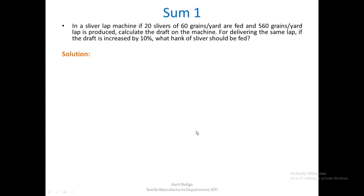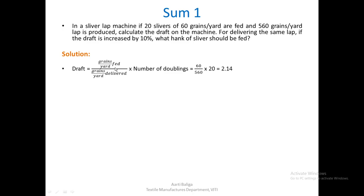Now we come to the first problem. In a sliver lap machine, 20 slivers of 60 grains per yard are fed and a 560 grains per yard lap is produced; calculate the draft. We calculate draft as (grains per yard fed × number of doublings) ÷ grains per yard delivered, and substituting the values we get a draft of 2.14.